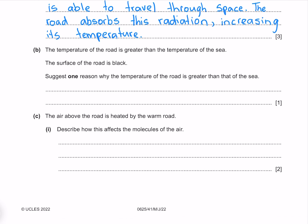The temperature of the road is greater than the temperature of the sea. The surface of the road is black. Suggest one reason why the temperature of the road is greater than that of the sea. One reason is that black is a good absorber of radiation.